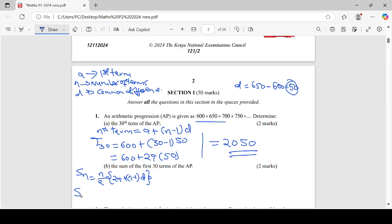Now because they want to get the sum of the first 30 terms, so the sum of 30 terms is being given by n is now 30, so that will be now 30 over 2 into 2 times a which is 600 from the equation plus n which is 30 minus 1 times d which is 50.